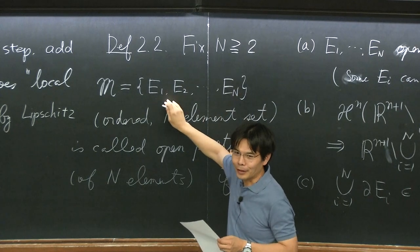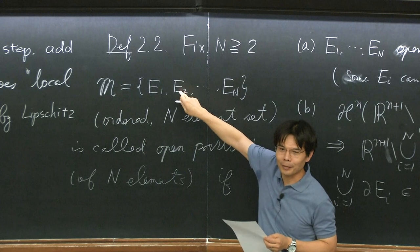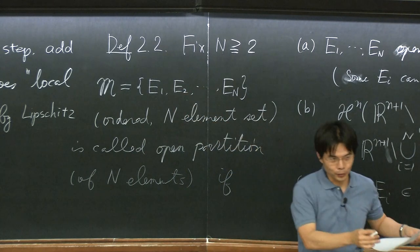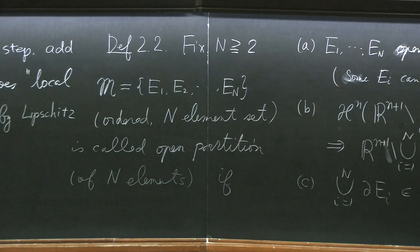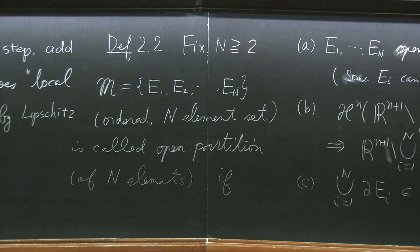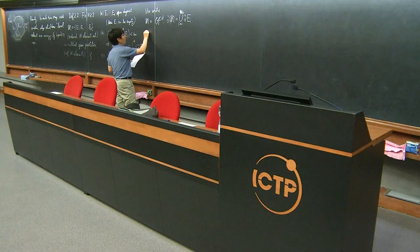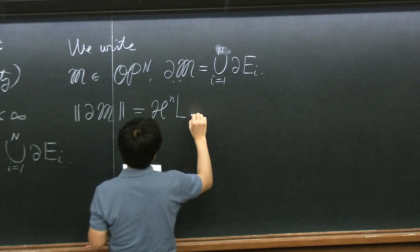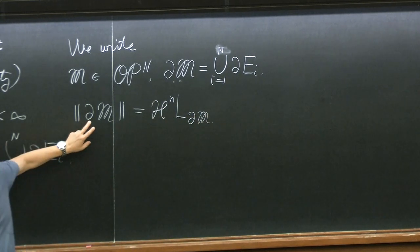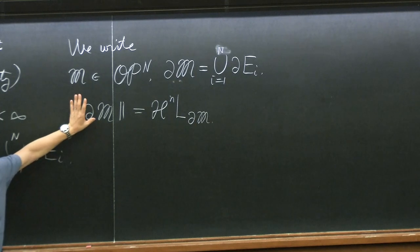Order just means I have these N elements which I want to keep track of; some of them become empty sets sometimes. For shorthand, if it's an open partition of N elements, I write this as script OPN. When I write the boundary of this script M, this is the Hausdorff measure restricted to this set — it's the surface measure of the boundary.